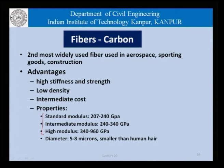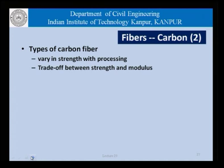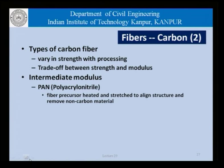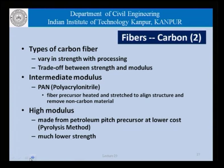The diameter of carbon fibers is about 5 to 8 microns, which is smaller than human hair. Carbon fibers vary in strength with processing and there is a trade-off between strength and modulus of elasticity. For intermediate modulus carbon fibers, we have PAN or polyacrylonitrile fibers, where the precursor fiber is heated and stretched to align the structure and remove non-carbon material. For high modulus material, it is made from petroleum pitch precursors at low cost using pyrolysis; it has much lower strength but high modulus.